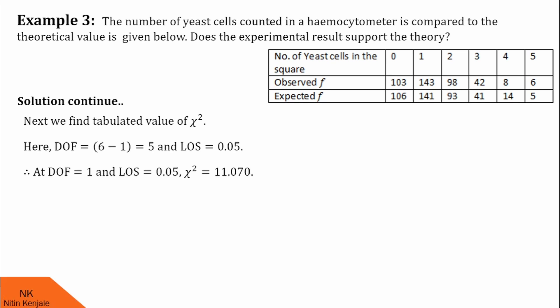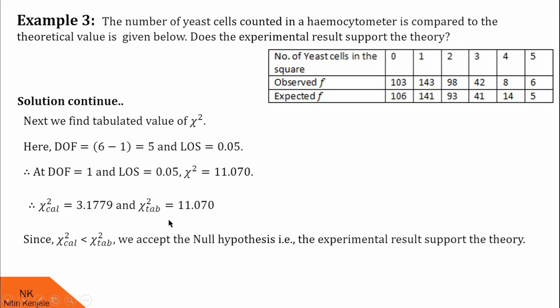Now, finally, we compare this calculated value and tabulated value. Here, we found the calculated value of chi-square is less than the tabulated value of chi-square. Therefore, we should accept the null hypothesis. And when we say so, we are saying the experimental results support the theory. That means there is no significant difference between the observed and the expected frequencies. I hope guys you understood this example too.